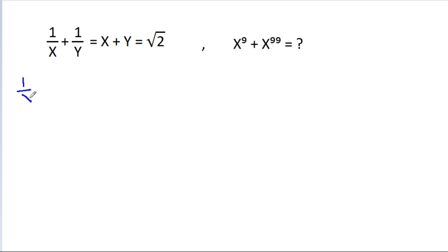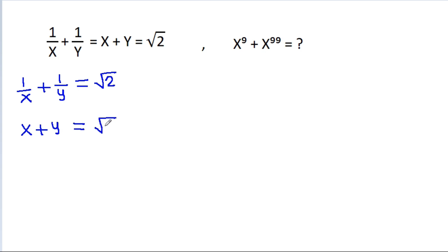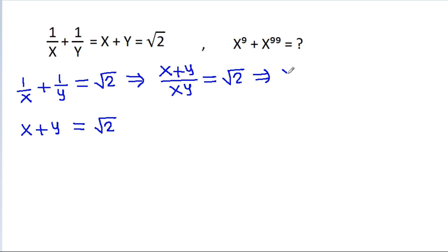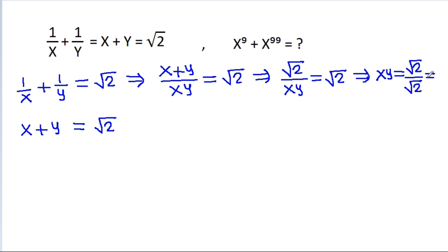So, we have 1/x + 1/y is equal to square root of 2, and x + y is equal to square root of 2. From here, it is (x + y)/xy is equal to square root of 2. And x + y is square root of 2, so square root of 2 divided by xy equals square root of 2. Therefore xy equals square root of 2 divided by square root of 2, that is 1.